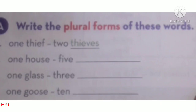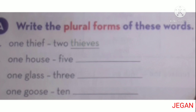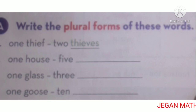Let's see our book exercise — write the plural forms. One thief → two thieves. One house → five houses, spelled H-O-U-S-E-S. One glass → three glasses, spelled G-L-A-S-S-E-S. One goose → ten geese, spelled G-E-E-S-E.